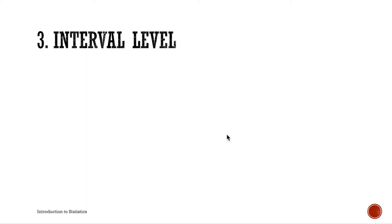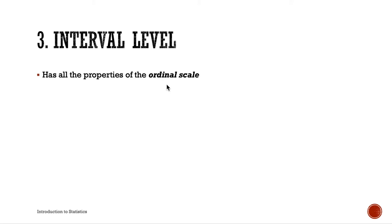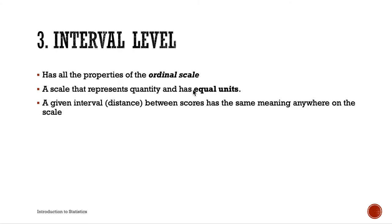Moving on to the interval level of measurement. The interval scale has all the properties of the ordinal level — it provides categories and rank order characteristics — but now it represents quantity with equal units. A given interval, that is the distance between scores, has the same meaning anywhere on the scale.